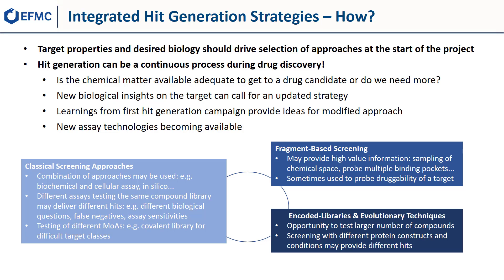Fragment-based screening may provide high value information: you may sample a better chemical space and probe multiple binding pockets. Very often FBS is used to probe the druggability of the target — if you're able to identify fragments and pockets, this may give you hope that a more classical screening approach may also be successful. Encoded libraries and DNA-encoded library techniques offer the opportunity to test the largest number of compounds, so these may be called for with difficult targets. You can even run several DEL screens with different protein constructs and conditions to get different hits. A combination of classical, fragment, and encoded library approaches may give you very different and very diverse starting points.